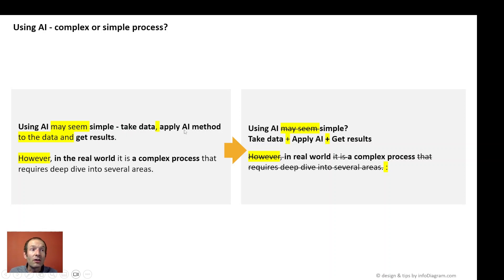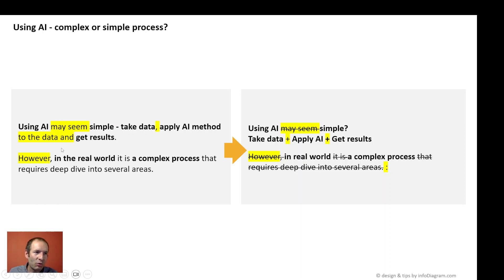Another thing you can notice is repeating words — like 'take data, apply a method to the data.' These are repeating things which we can skip, and just mention once.